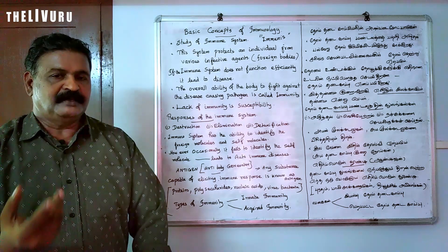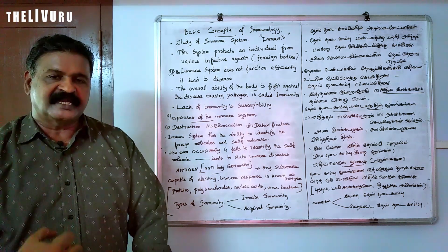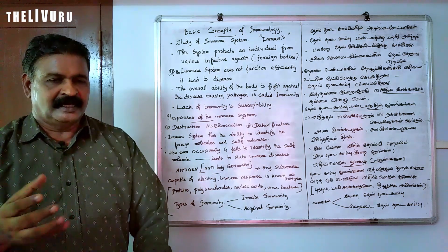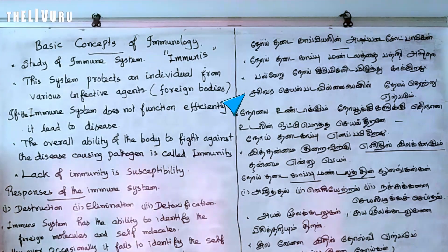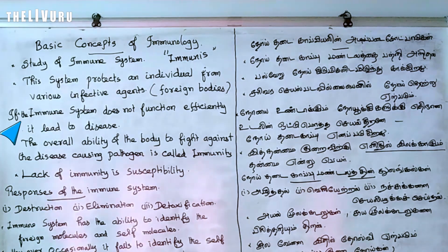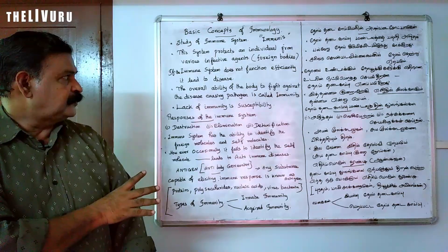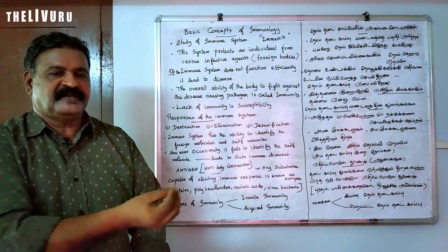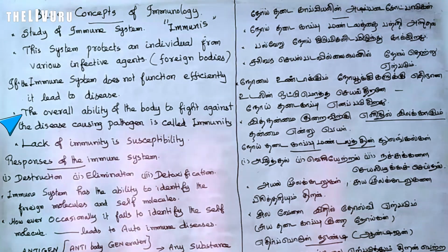If the immune system does not function efficiently, it will lead to diseases. The immunity is the overall ability of the body to fight against disease-causing pathogens — this is called immunity.